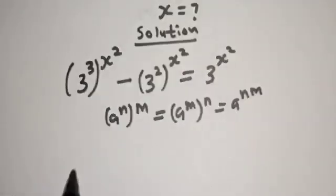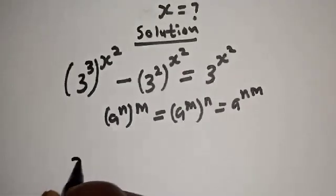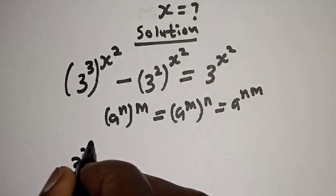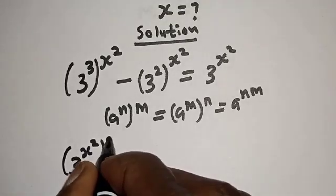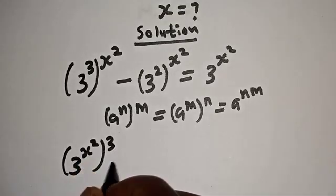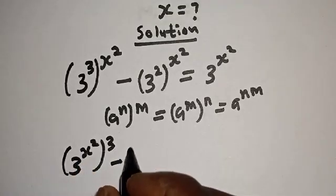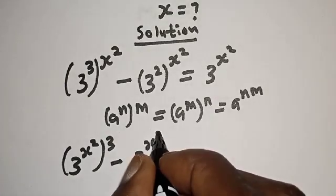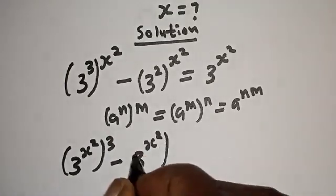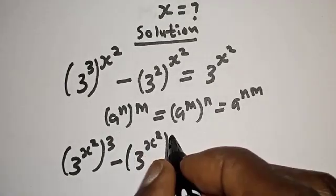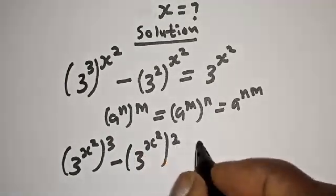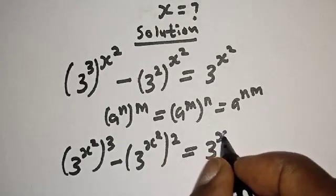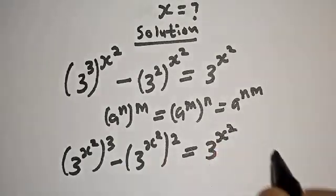So applying that rule, we have 3 raised to power x squared, to the power of 3, minus 3 raised to power x squared, to the power of 2, is equal to 3 raised to power x squared.